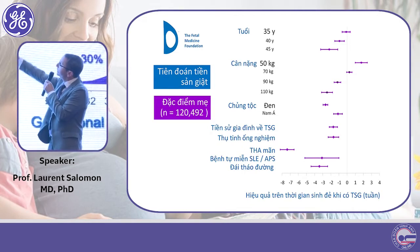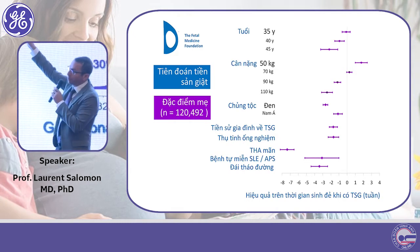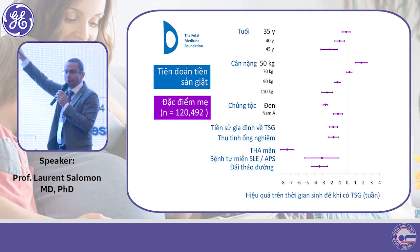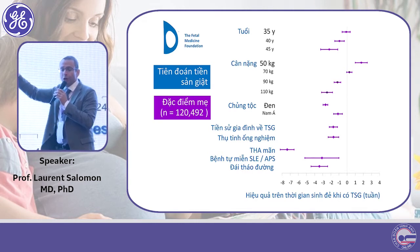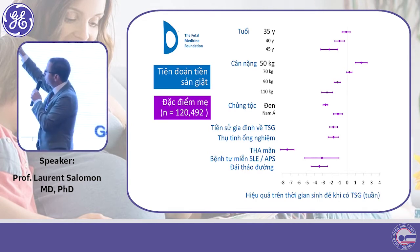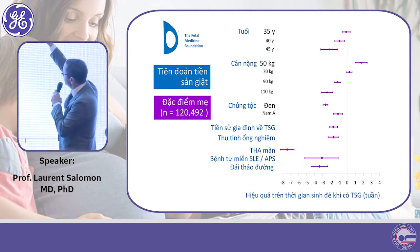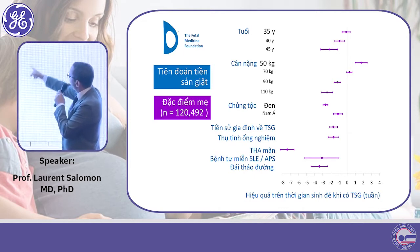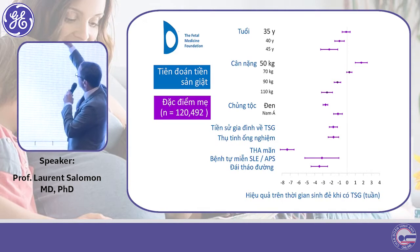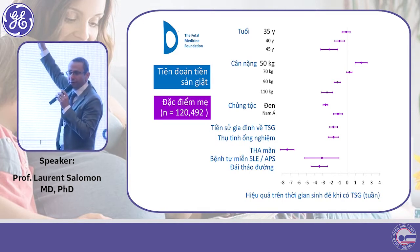There are many variables on time to delivery with preeclampsia in this model. For example, if you are older, the model says you are more likely to develop preeclampsia early in pregnancy — the older, the earlier. On average, if you are 45 years old you will have preeclampsia approximately two weeks earlier than if you are 35.